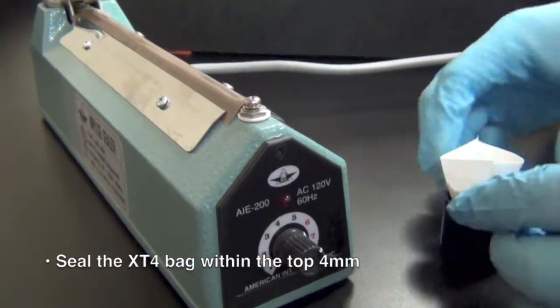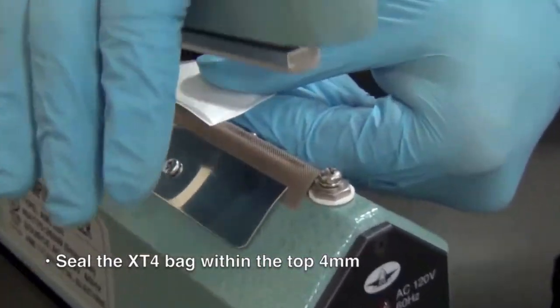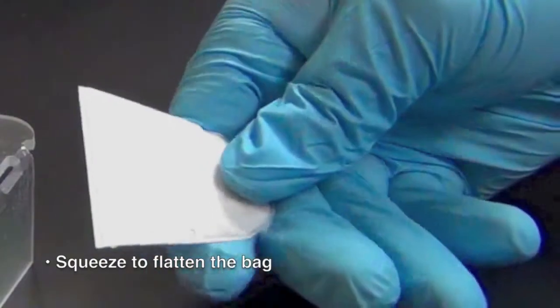Seal the XT4 filter bag within 4 millimeters of the top of the bag. Lightly squeeze the bag to flatten it.